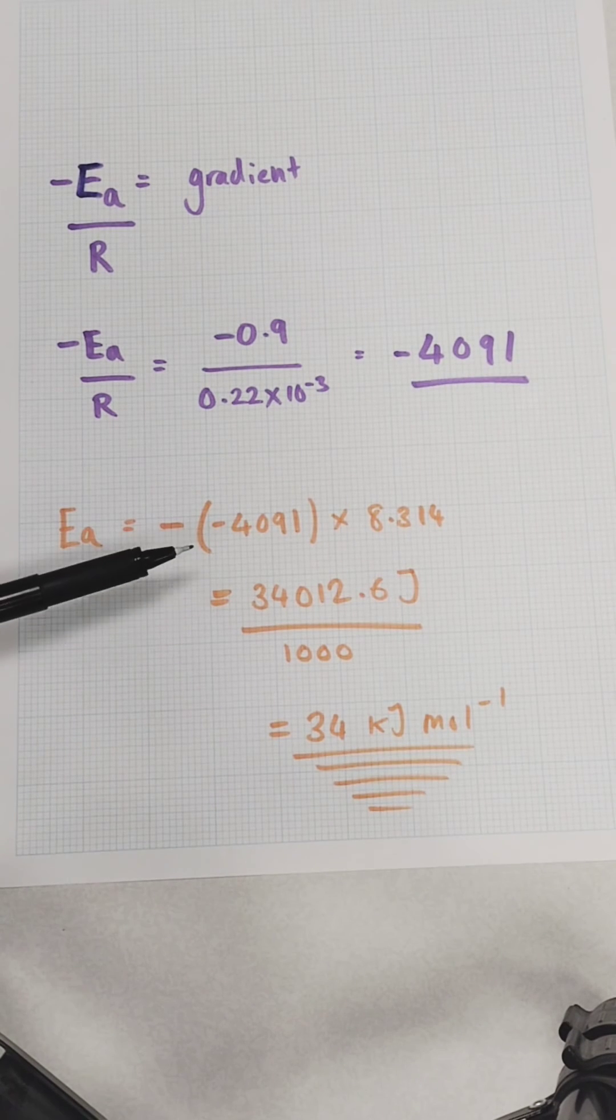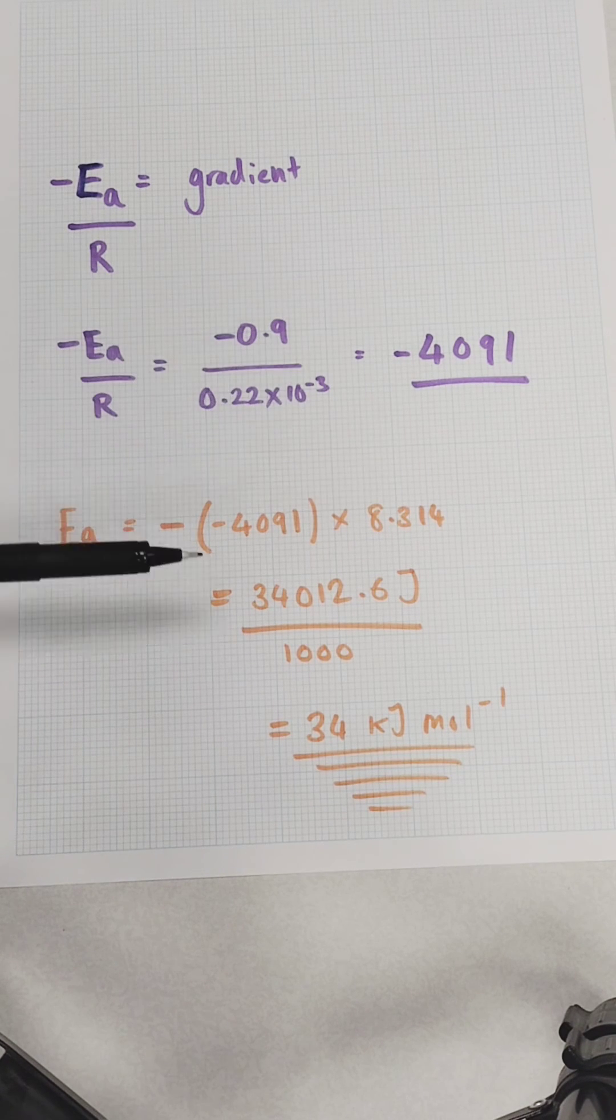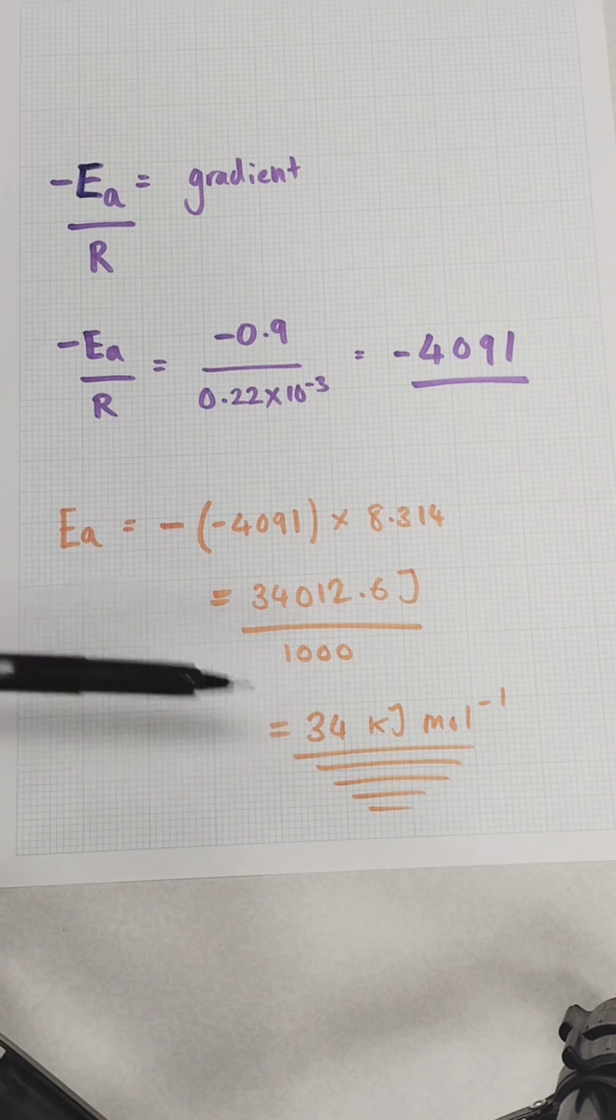Finally, convert that minus Ea value into a positive, multiply by the value of R to get the activation energy in joules, divide by a thousand to get kilojoules, and you've solved that problem!